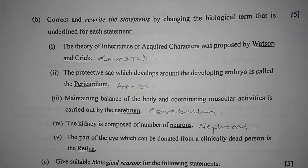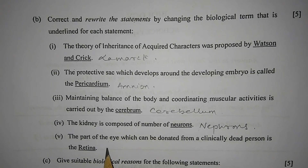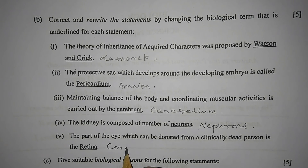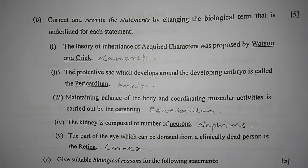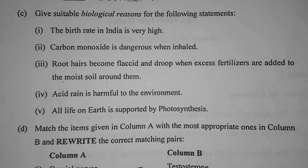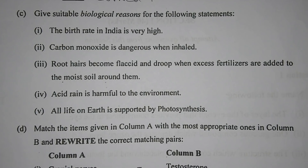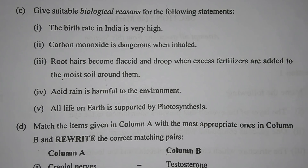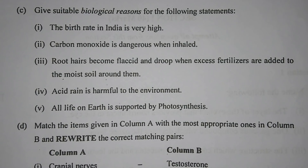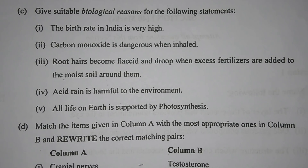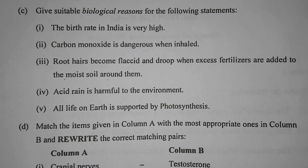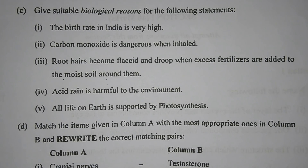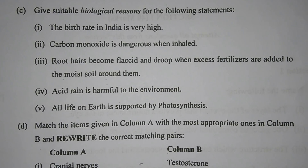Question 1c: Give suitable biological reasons for the following statements. Number 1 — the birth rate in India is very high. The reason is illiteracy; many people are not aware of family planning. There are other reasons also — you can write any one of them.